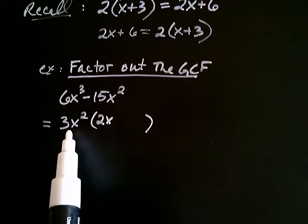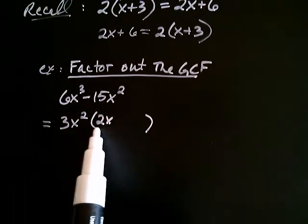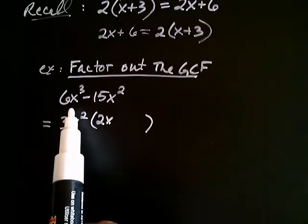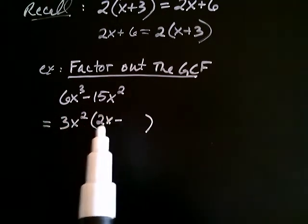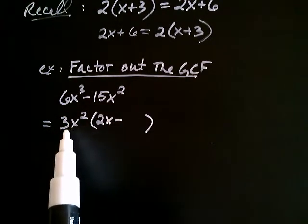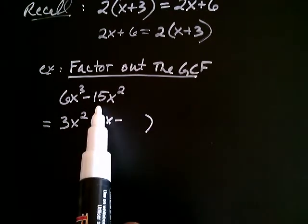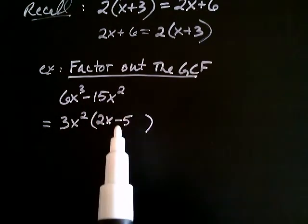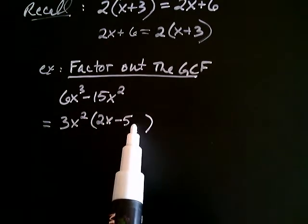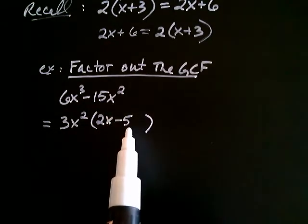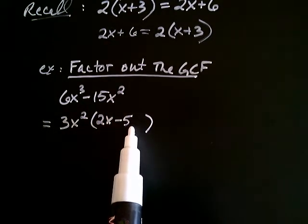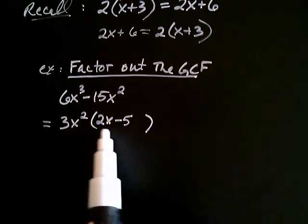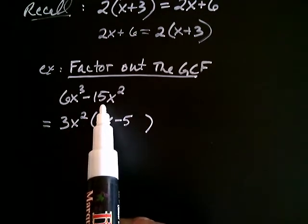So, let's just check that. 3x squared multiplied by 2x is 6x cubed. And then minus, well, now we go on to the next one. 3 times what will give 15? That's going to be a 5. And then x squared times what gives x squared? Well, I don't need anything else here, because 3x squared multiplied by 5 gives me my 15x squared.